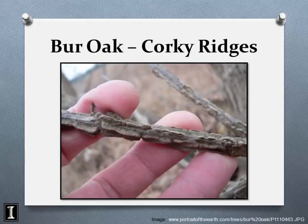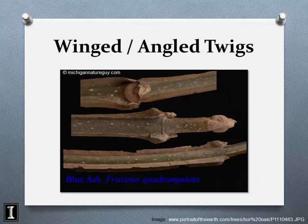Some twigs have corky ridges — bur oak juvenile twigs often show these corky growths, which is an excellent way to identify certain species. Some twigs are winged or angled: blue ash, Fraxinus quadrangulata — quadrangulata meaning four-angled — has a very distinctive four-angled twig.